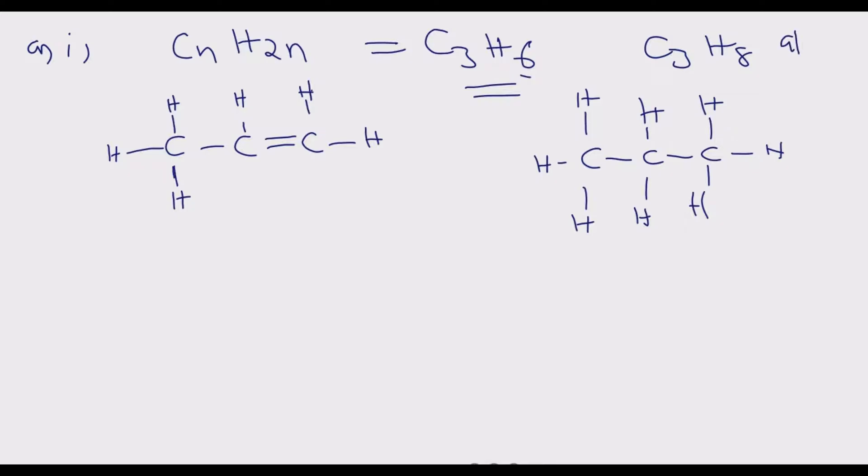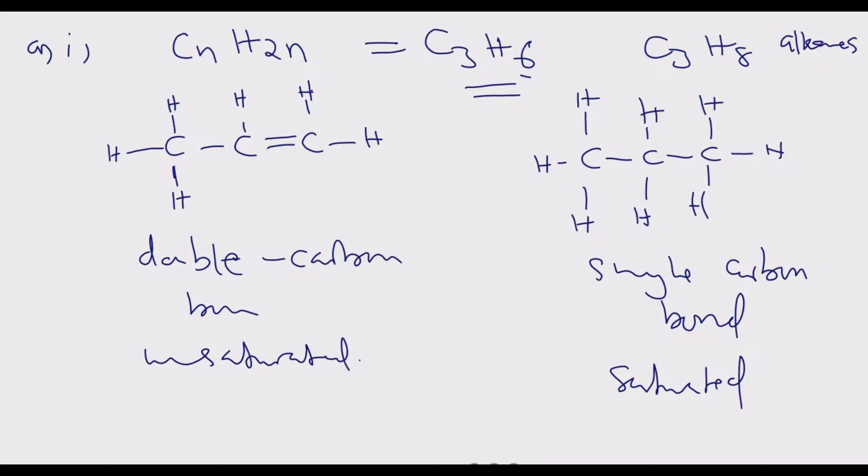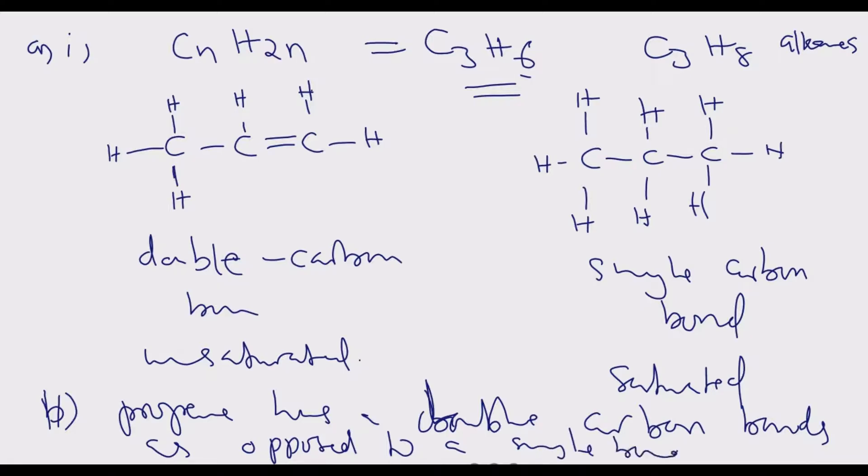That's why alkanes are referred to as saturated compounds because they do not have a bond that remains open to addition. The difference is this one has a double carbon bond, then this one has a single carbon bond, hence these are saturated and these are unsaturated. Propene has double carbon bonds as opposed to single bonds.